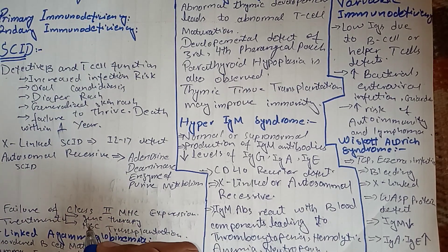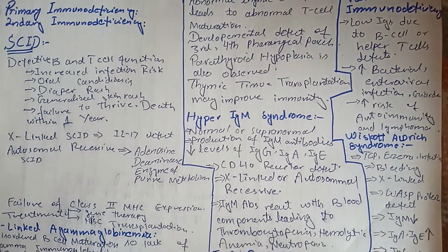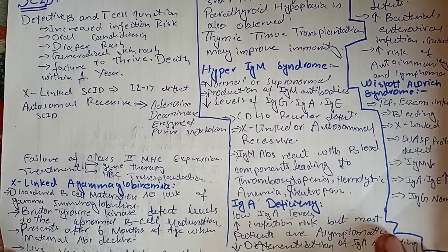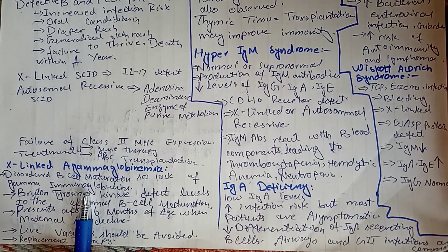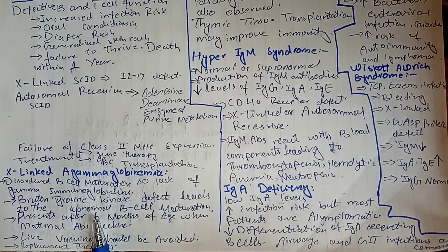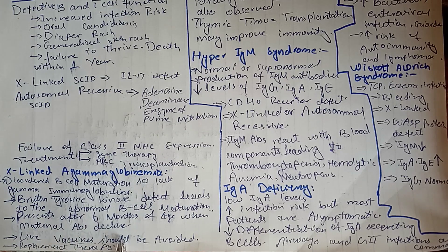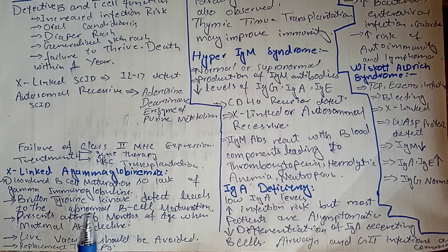X-linked agammaglobulinemia follows an X-linked pattern of inheritance. There is disordered B cell maturation — B lymphocytes don't mature properly — leading to lack of immunoglobulin production and defective humoral immune response. Live vaccines should be avoided in these patients, as they cannot produce immunity but can cause infection. The principal defect is in Bruton's tyrosine kinase, which is involved in B cell maturation.